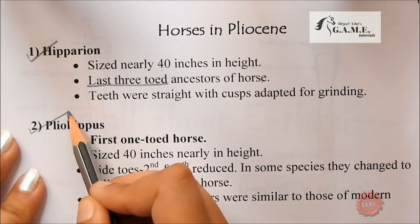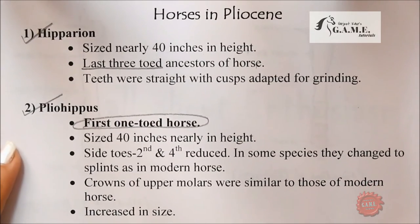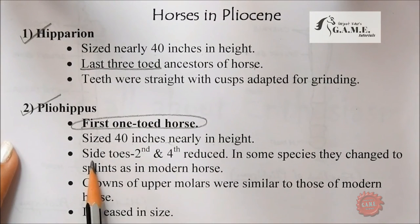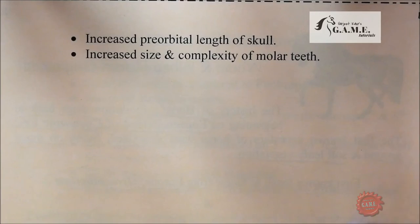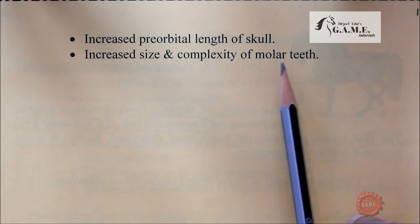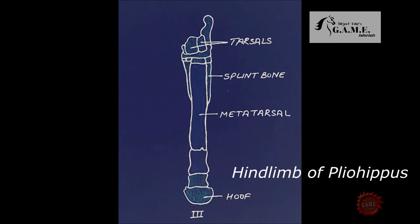Pliohippus was the first one-toed horse, also about 40 inches in height. Side toes — second and fourth — were reduced, and in some species changed to splints as in modern horses. Crowns of upper molars were similar to those of the modern horse, showing increased height. The pre-orbital length of the skull also increased, along with increased size and complexity. You can see the splint bone in both the forelimb and hind limb of Pliohippus.